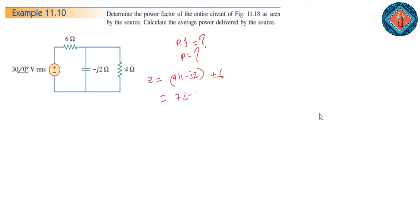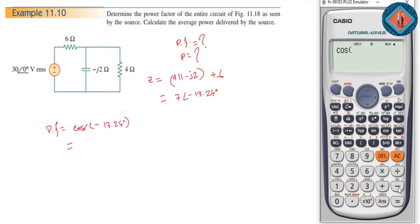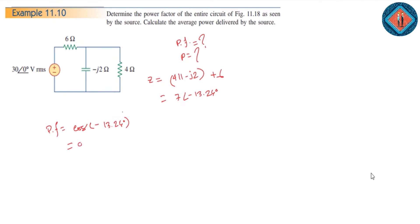For the power factor, we calculate cosine of minus 13.25 degrees. The power factor equals 0.9734.